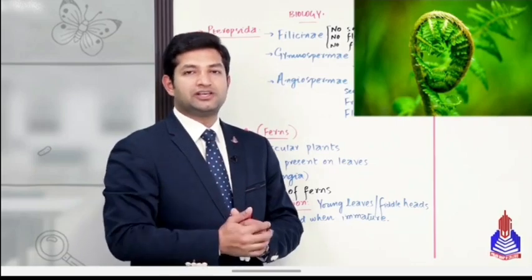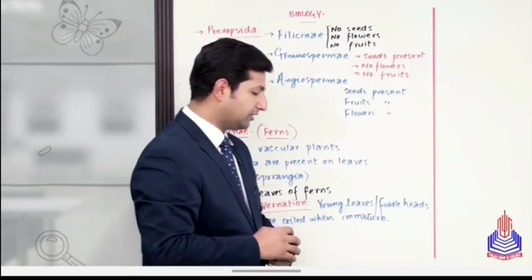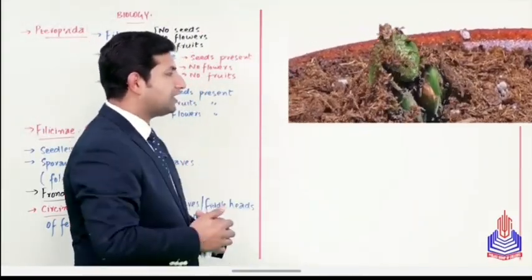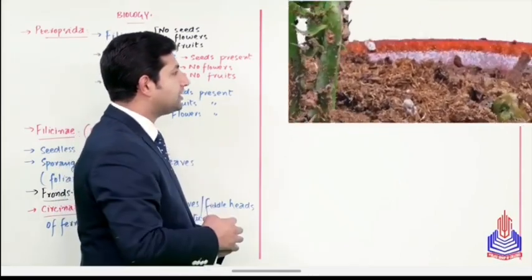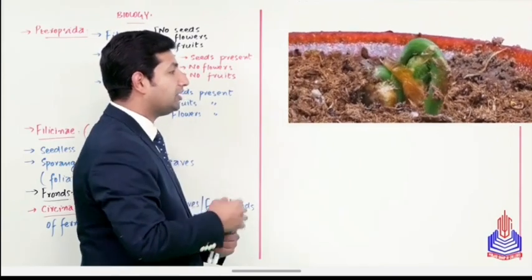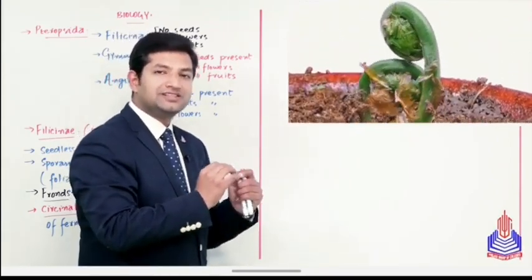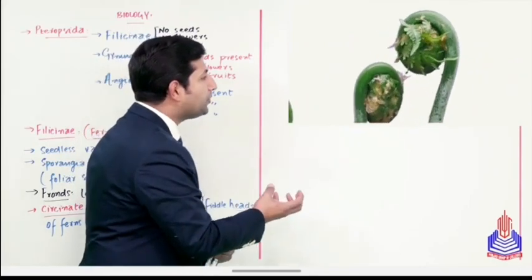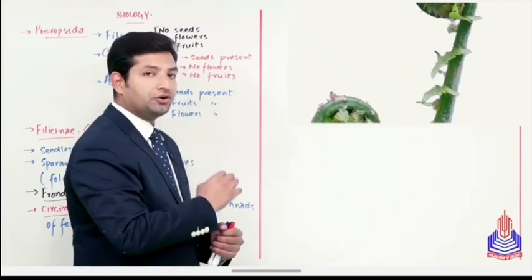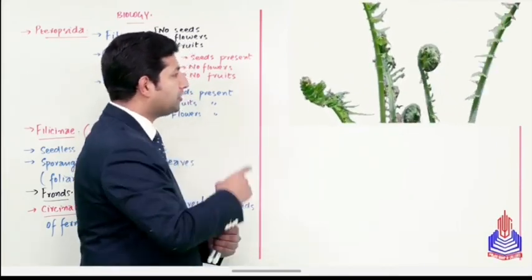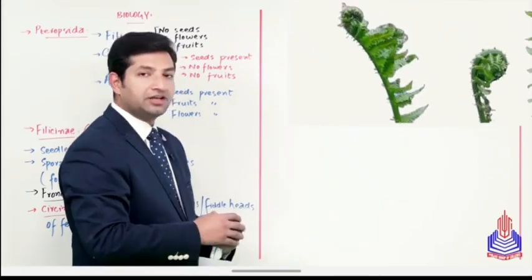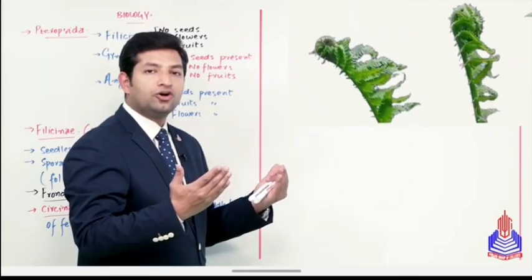और circinate vernation और fronds ये वो दो specific terms हैं जो हम normally सिर्फ ferns की explanation में इस्तमाल करते हैं। अब ये बात भी याद रखिएगा, कि जैसे जैसे leaves की growth होती चली जाए, तो साथ साथ ये जो इनका coiled structure है, ये uncoiled होता हुआ नज़र आता है। इसको ज़रा हम देख लेते हैं यहाँ पे। जैसे ही ये ऊपर की जानिब grow करते आए हैं, तो आहिस्ता आहिस्ता turgor pressure और ions की movement की वजह से ये uncoiled होते चले जाते हैं।